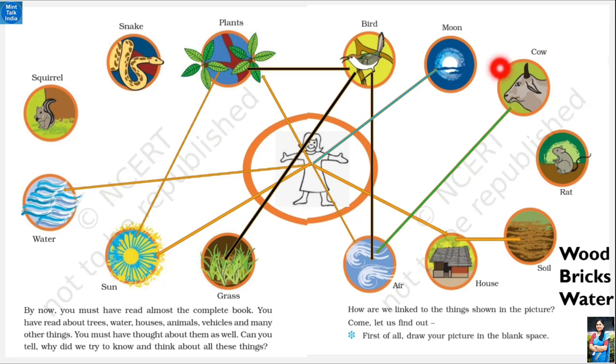Next is cow. Cow eats grass. That is why grass is related to cow. That is why cow is also related to us. What is the relation with rat? Rat is related to soil. Rat is related to air.